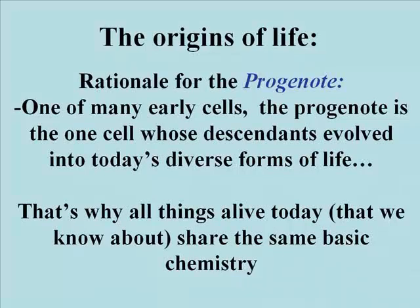And that the descendants of the progenote included a cell called the last universal common ancestor, or LUCA, that evolved into the diverse life forms we see today. This is the best scientific explanation of how all cells and organisms come to share the same biochemical way of doing the basics of living.